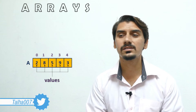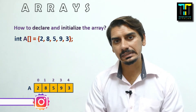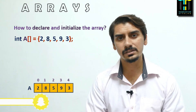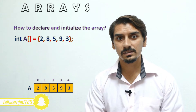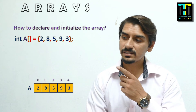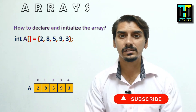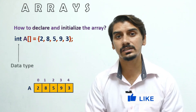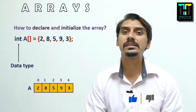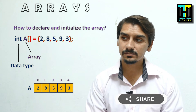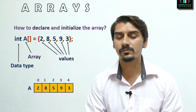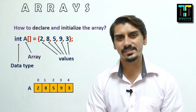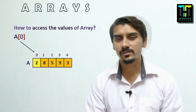Now that we have a clear concept of arrays, let's see how we can declare and initialize an array. Suppose we have an array with elements 2, 8, 5, 9, and 3, and we have to declare and initialize it. The statement is: int a[] = {elements in curly braces}. Here 'int' represents the data type, 'a' represents the name of the array, and within the curly braces are the elements or values placed in array 'a'.